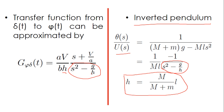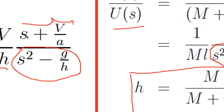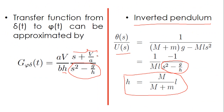However, in the numerator of the bicycle transfer function you have the term s plus v over a, which is not present in the inverted pendulum — the inverted pendulum has minus one in the numerator. If you study more about control systems, you will see that the presence of this term makes it a lot easier to stabilize the bicycle compared to the inverted pendulum.